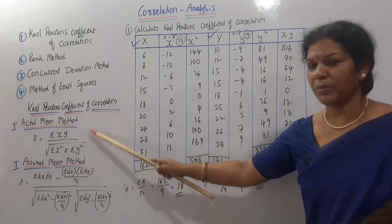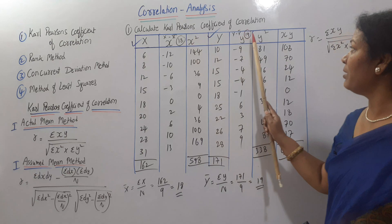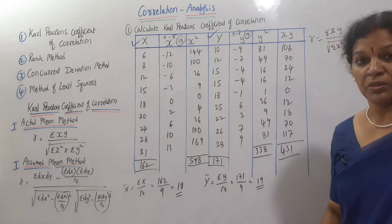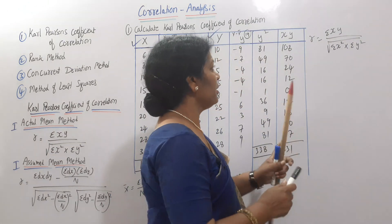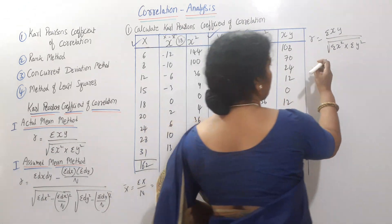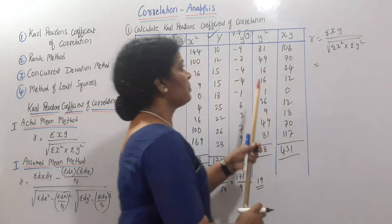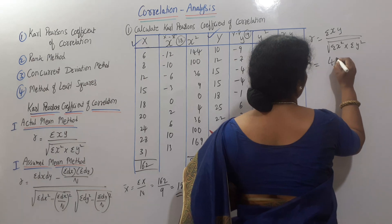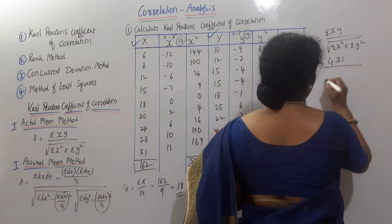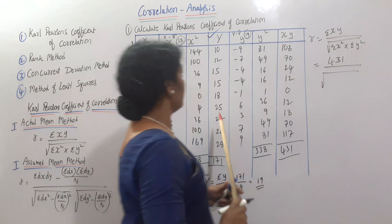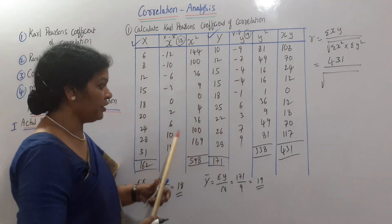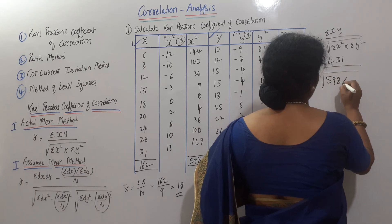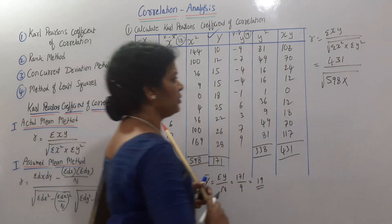As per the formula, sigma xy is 431. Applying the formula: r equals 431 divided by the square root of sigma x squared times sigma y squared. Sigma x squared is 598 and sigma y squared is 338.